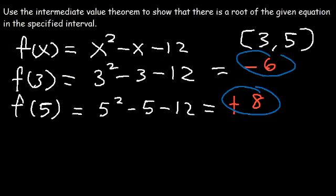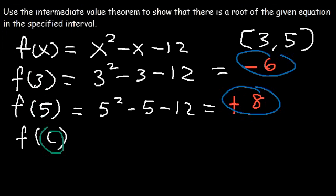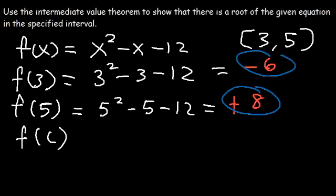So there is some number c, where c is between 3 and 5, such that f(c) is between negative 6 and 8. Since 0 is between negative 6 and 8, c has to be between 3 and 5. Let's go ahead and find that value of c, which is a root of the given equation.